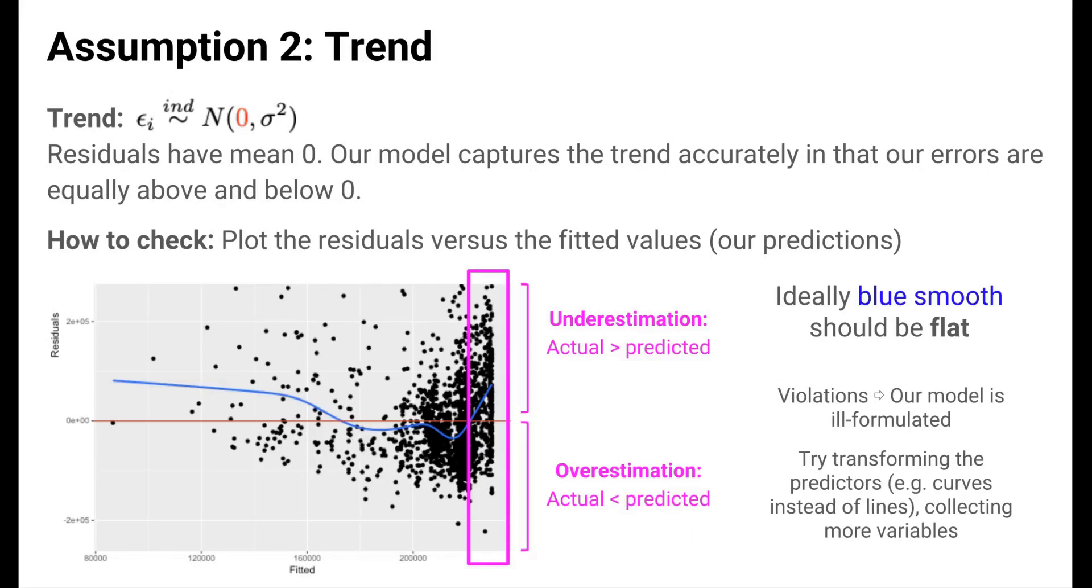We can try to fix this by modifying the age predictor to allow for a non-linear relationship. For example, we might use age squared in the model. We'll explore several ways to handle non-linearity later in the course. We can also add other predictors to our model to correct the systematic over and underestimation.